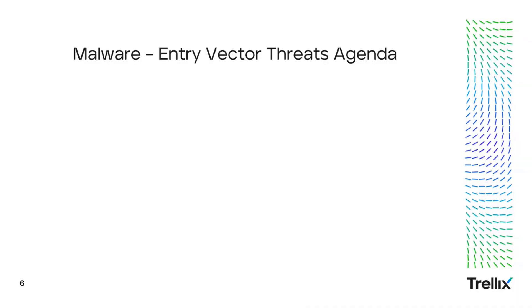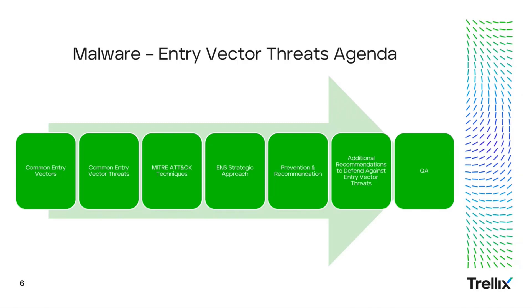Thanks, Nick. I want to welcome everyone to another Trellix Spotlight Series where we'll be looking at entry vector threats today. First on the agenda, we'll look at common entry vectors, which will consist of email, web, direct access, and other. From there, we'll take a look at various types of entry vector threats along with their attack flow. Once we conclude with the attack flow, we'll look at commonly used MITRE ATT&CK techniques using entry vector attacks and how these map to an overall ENS strategic approach. This will then take us into specific countermeasures under prevention and recommendation. We will then conclude with additional recommendations and a Q&A session.